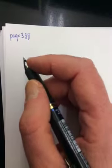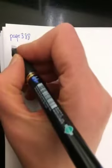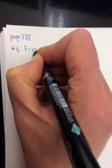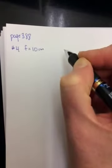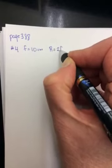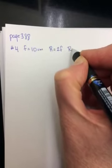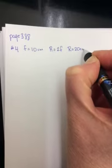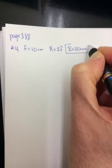Okay, so page 388, number 4. A concave mirror has a focal length of 10 centimeters. So F equals 10 centimeters. And then the question is, what is the radius of curvature? So hopefully you remember, R equals 2F. So R should be equal to 20 centimeters. Number 4 is done.